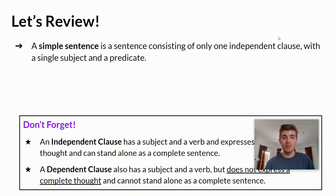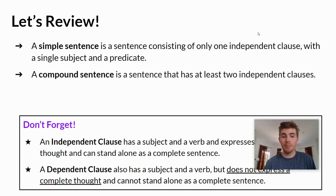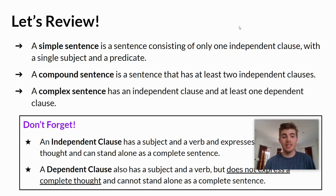A simple sentence consists of only one independent clause with a single subject and a predicate. A compound sentence is a sentence that has at least two independent clauses. A complex sentence has an independent clause and at least one dependent clause.